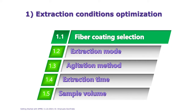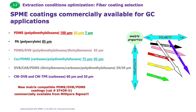Let's describe the different steps we need to optimize to improve extraction conditions. First is the selection of the fiber extraction phase, also called fiber coating. When you select the most suitable extraction phase for your application, you always need to keep in mind the physical chemical properties of the analytes you want to extract. There are different types of SPME fibers that can extract analytes with various polarity or volatility.